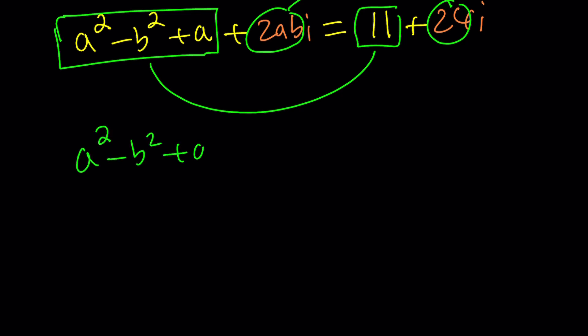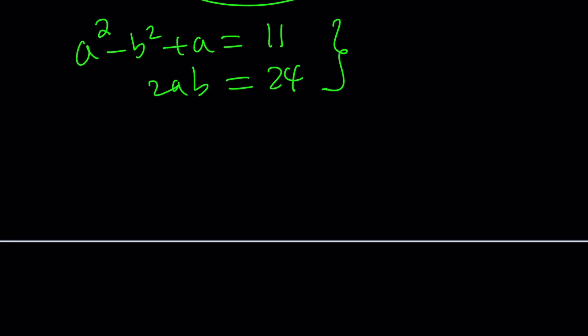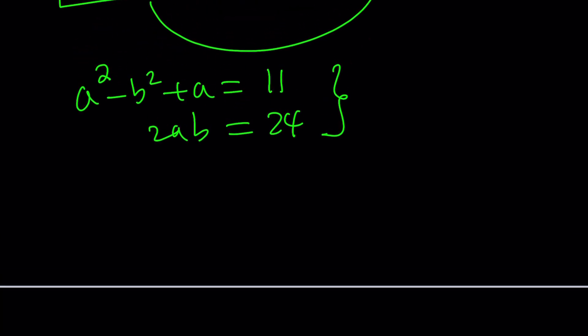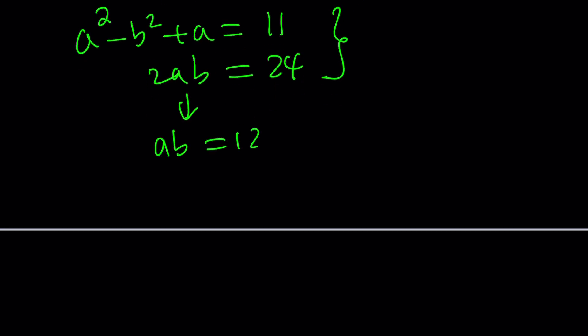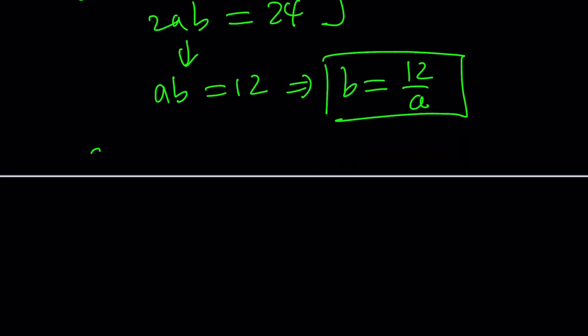Now from here we get the following: a squared minus b squared plus a equals 11, and 2ab equals 24. That is a system of equations which we need to solve. How do you solve it? That's a good question, that's a million dollar question actually. So we're going to try different things. Here's one thing you can do. I think first simplify this, that gives you ab equals 12. And then from here you can isolate either b or a. I'll probably go with b because there's only one occurrence. How about replacing b with 12 over a?